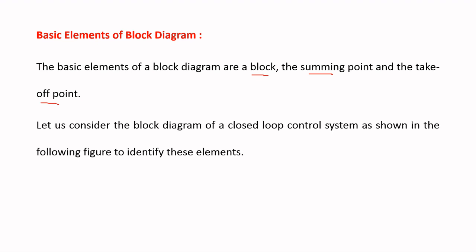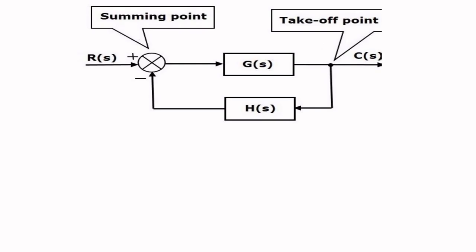By considering a simple block diagram of a closed loop control system, we are going to discuss each element — what is a block, what is a summing point, and what is a takeoff point. This is the simple block diagram of a closed loop control system. In this system there are two blocks, one summing point, and one takeoff point. The two blocks have transfer functions G(s) and H(s). R(s) and C(s) are the input and output of the system, and the arrow marks represent the direction of signal flow.